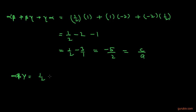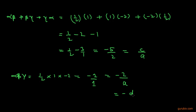Finally, the product of the zeros: α × β × γ = (1/2)(1)(-2) = -1. We can write this as -d/a, where d is the constant term and a is the coefficient of x³. So all three relationships are verified. This is the solution of the question.